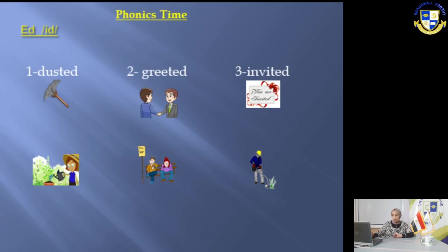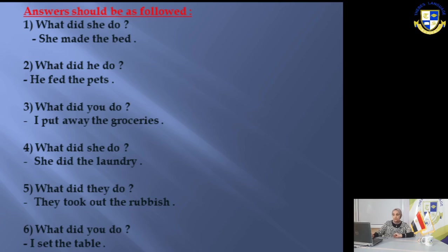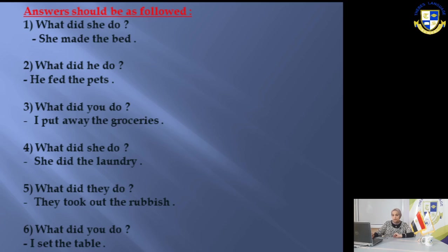Now I'm going to re-read the answers on slide 7. Number one: 'What did she do?' — 'She made the bed.' Number two: 'What did he do?' — 'He fed the pets.' Number three: 'What did you do?' — 'I put away the groceries.' Number four: 'What did she do?' — 'She did the laundry.' Number five: 'What did they do?' — 'They took out the rubbish.'